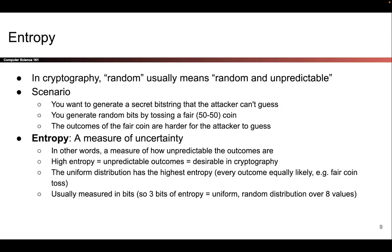Before we can talk about how to generate these random numbers, we should first talk about what random actually means and how it's defined. In cryptography, when we say random, we really mean random and unpredictable. As an example, let's say we want to generate a secret key that the attacker can't guess. Intuitively, the best way might be to toss a fair coin — one that comes up heads 50% of the time and tails 50% of the time. If it comes up heads, write a zero; if tails, write a one. Do this over and over and you have a secret bit string that is very hard for the attacker to guess.